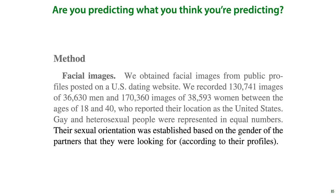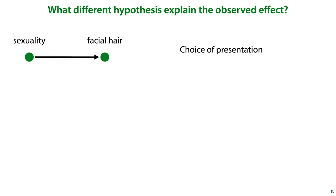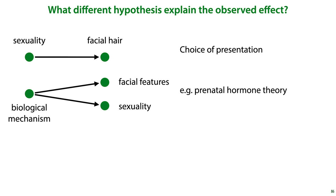One good way to help us make sense of this is to come up with different hypotheses that explain the observed effect. The authors observe that in their dataset the heterosexual men are more likely to have facial hair — that's most likely a grooming choice based on the differences in gay and heterosexual subcultures. For other correlations, such as that between sexuality and nose length, the authors suggest the prenatal hormone theory, a theory that relates prenatal hormone levels in the mother with the sexuality of the subject — in short, a biological mechanism responsible for both the slight variation in facial features and the variation in sexual orientation.